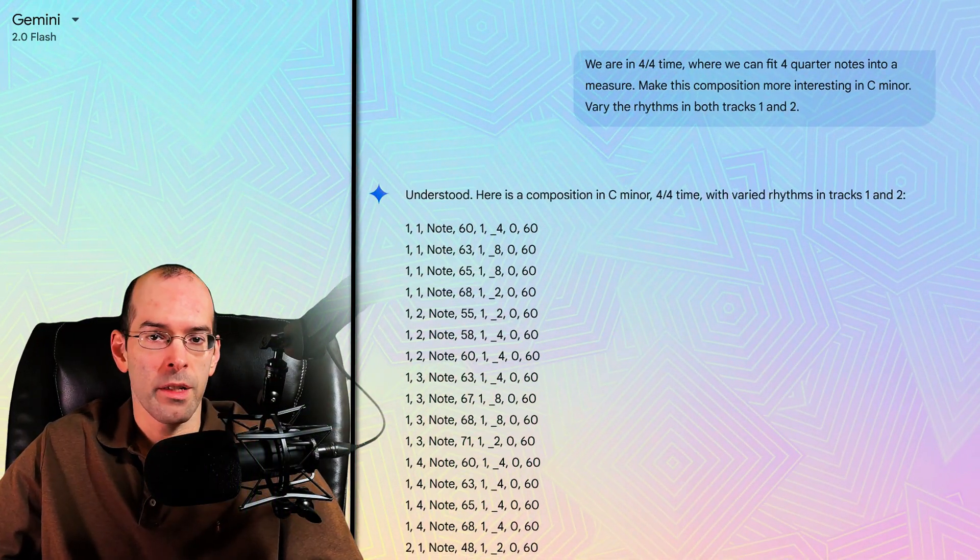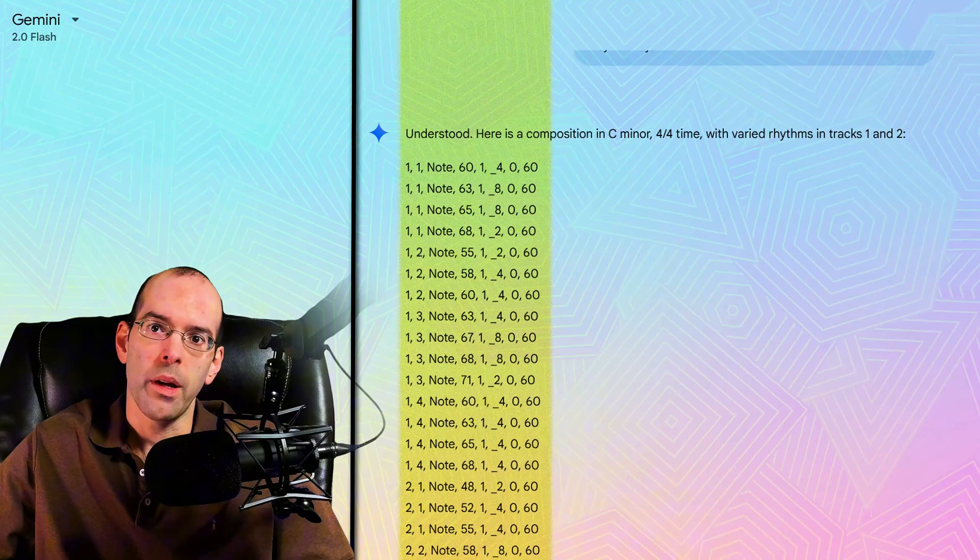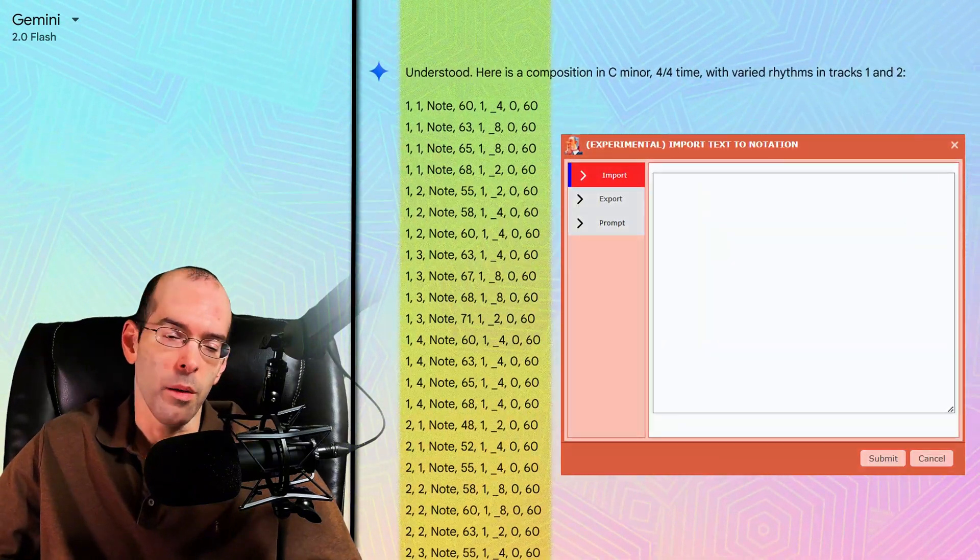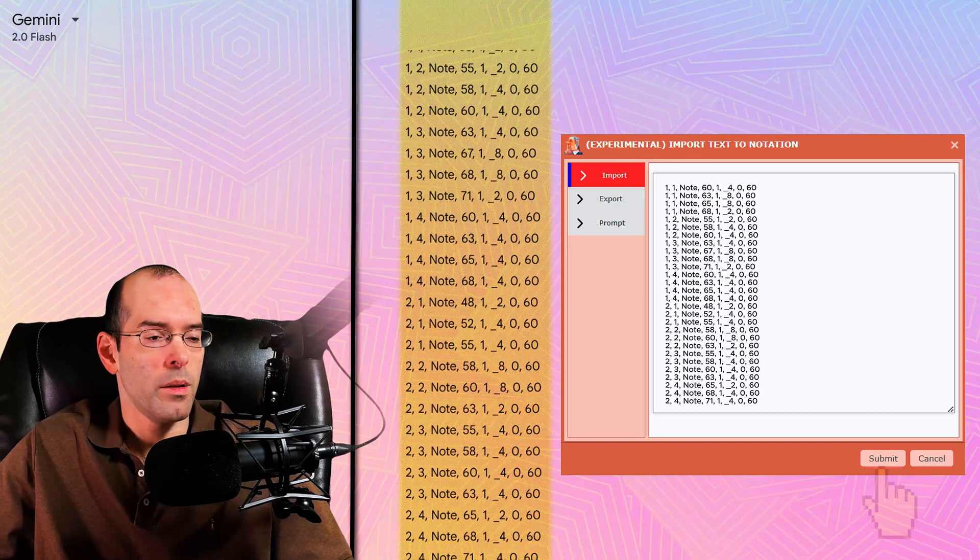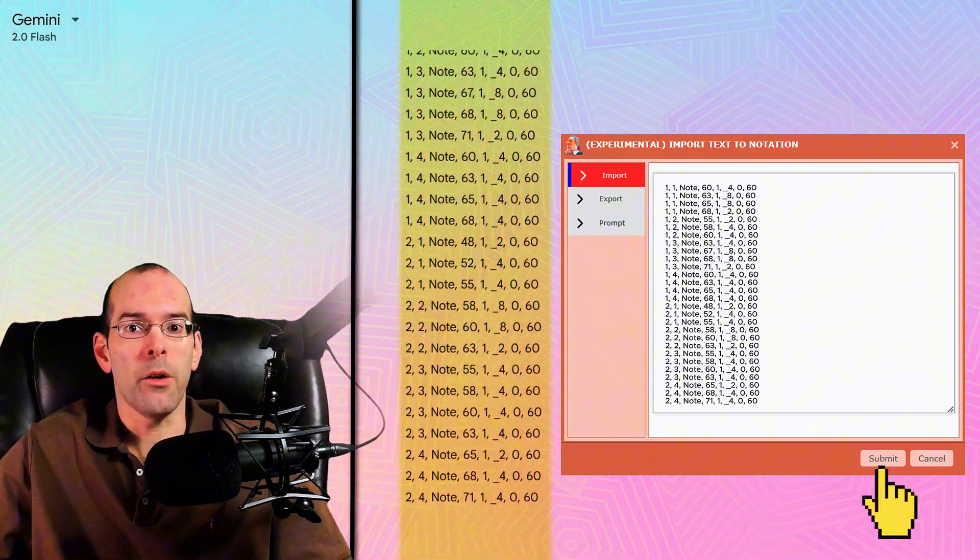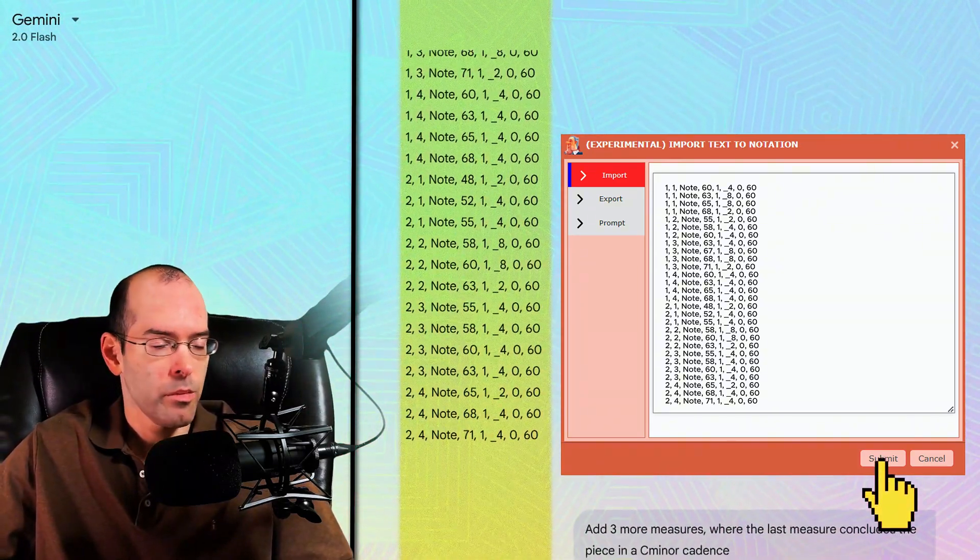So we essentially take this text from Gemini, and then we paste it into the import text area in MusicDotter. And after we hit submit, MusicDotter will now compose Gemini's results. Let's take a listen.